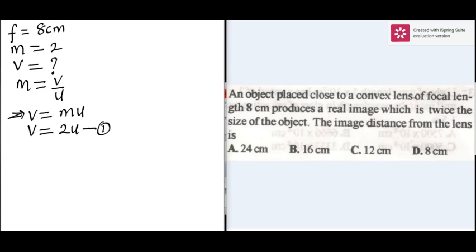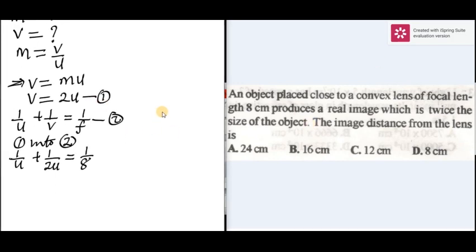The lens formula says that 1 over u plus 1 over v is equal to 1 all over the focal length. This is equation 2. If you substitute equation 1 into 2, we have 1 over u plus 1 over 2u is equal to 1 over 8. We can simplify this equation.